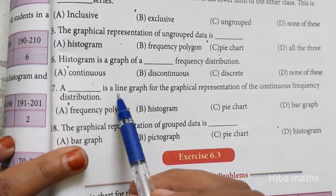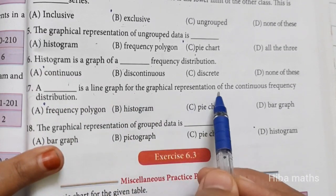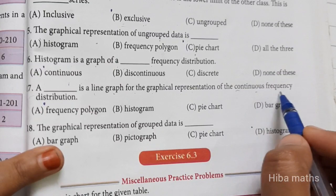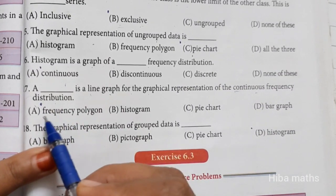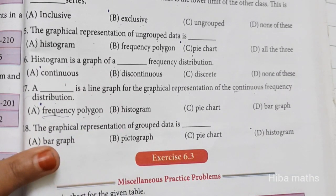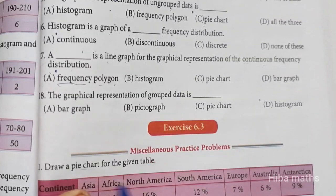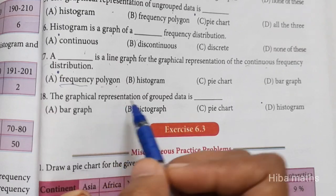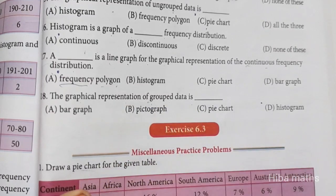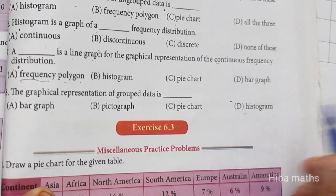It is a line graph for graphical representation of continuous frequency distribution. Line graph is called frequency polygon. Eighteenth question: The graphical representation of grouped data is histogram.